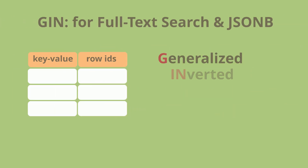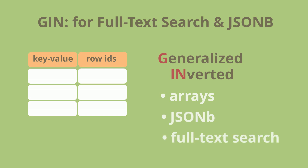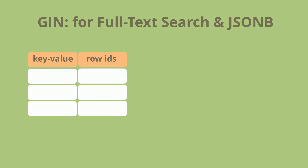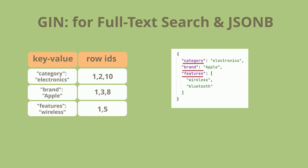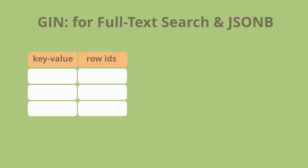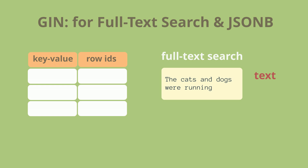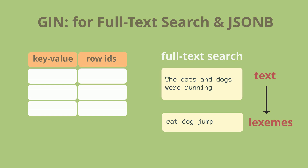Now let's talk about GIN – generalized inverted index. This index is perfect for complex data types such as arrays, JSONB, and full-text search. Unlike Btree, which indexes entire rows, GIN stores multiple keys for a single row, allowing for much faster lookups when searching for specific elements. When you create a GIN index on a JSONB column, PostgreSQL extracts each key-value pair and builds an inverted index where each pair corresponds to row IDs, allowing it to instantly find rows containing a specific tag. For full-text search, a GIN index works by breaking down text into lexemes – normalized words without prefixes or suffixes – with each word indexed separately for fast searches.